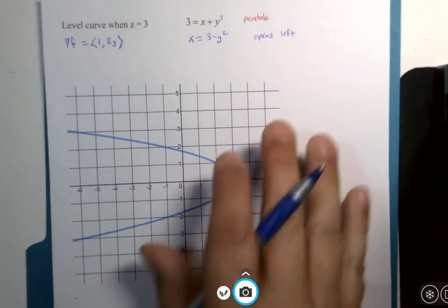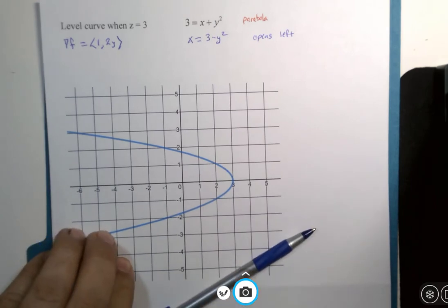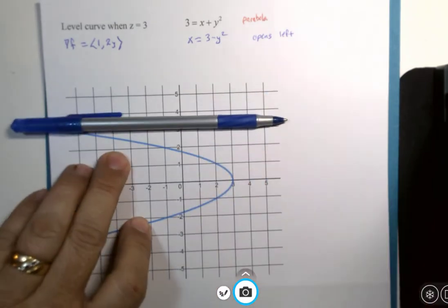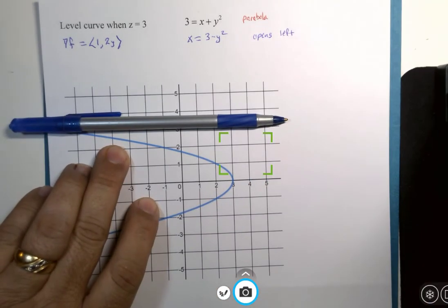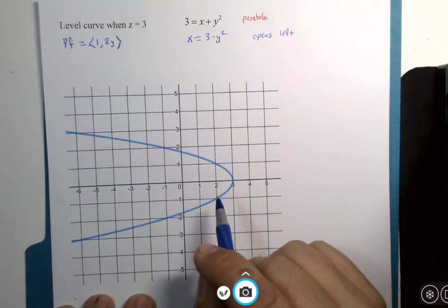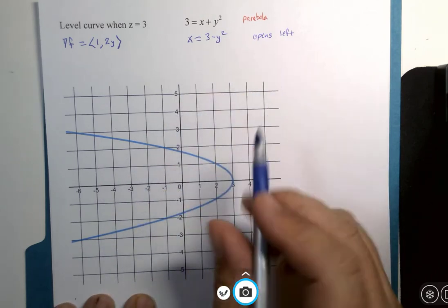Alright. My focus needs more focus. There we go. Here is a level curve. It's a parabola that opens left.